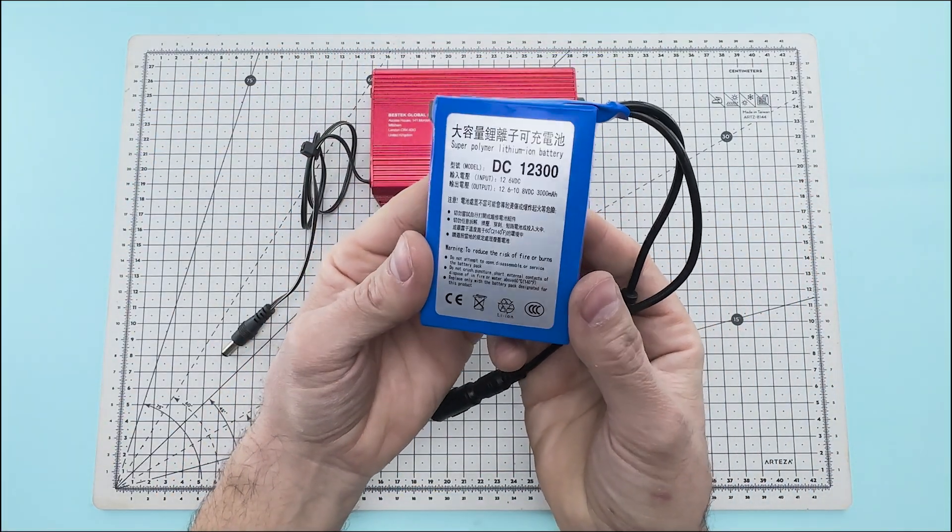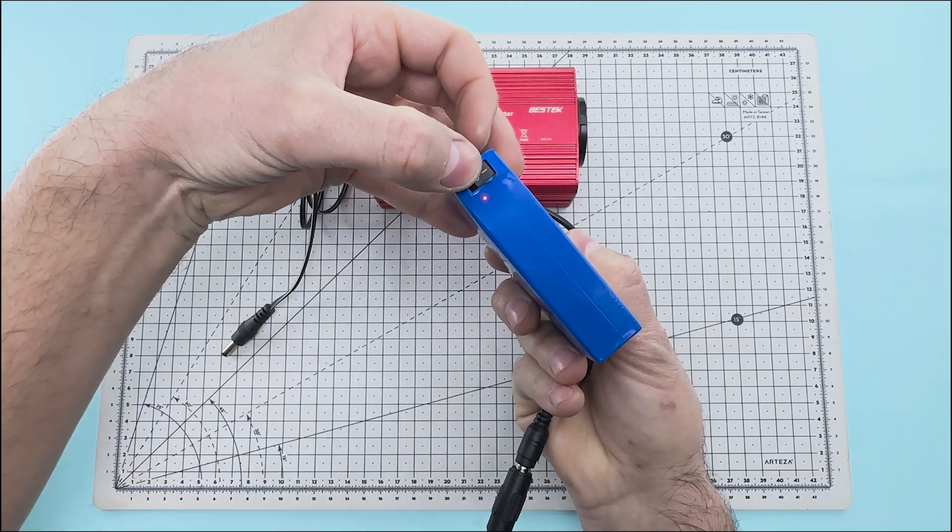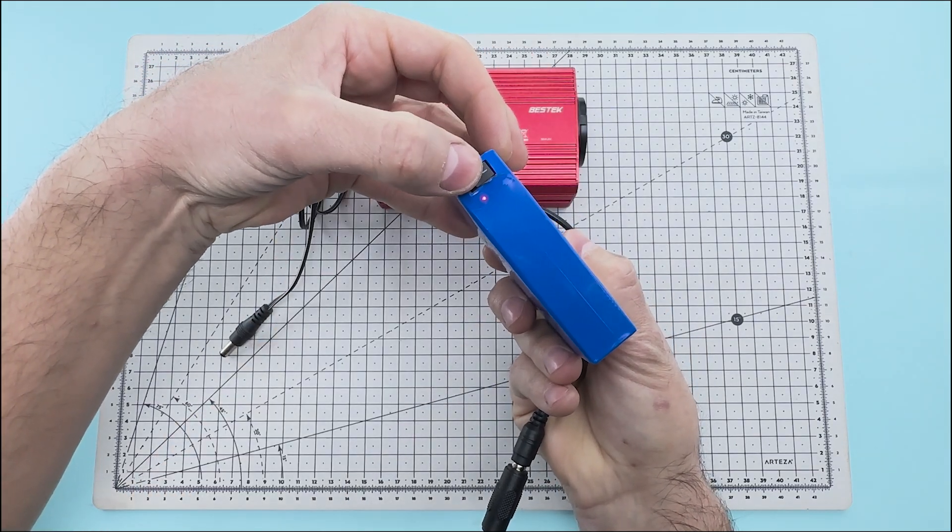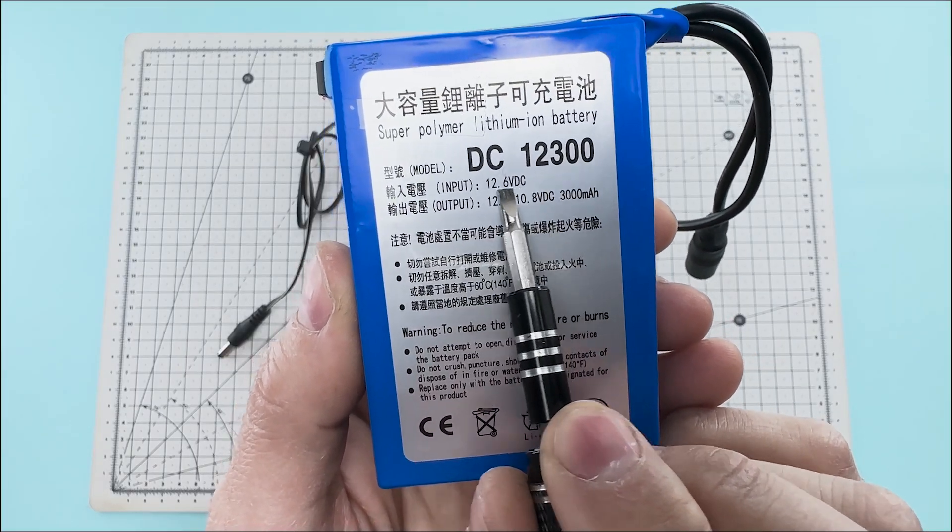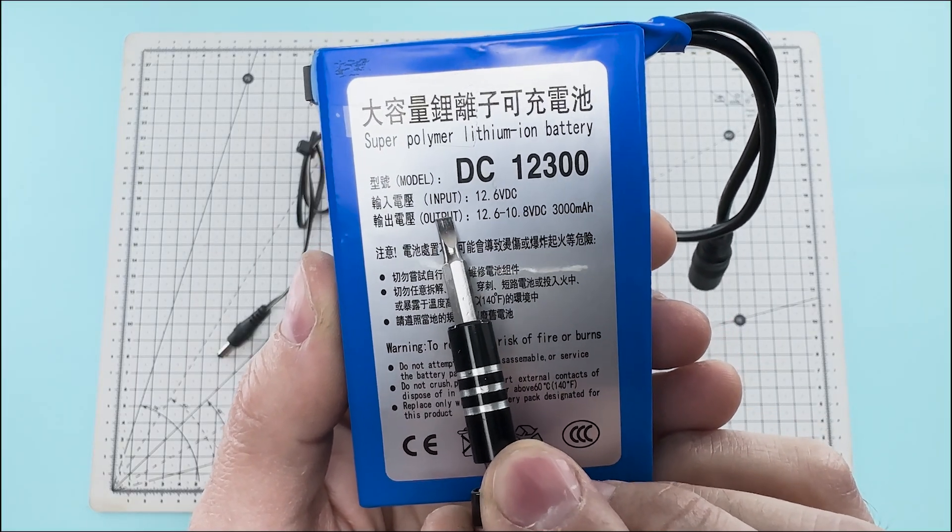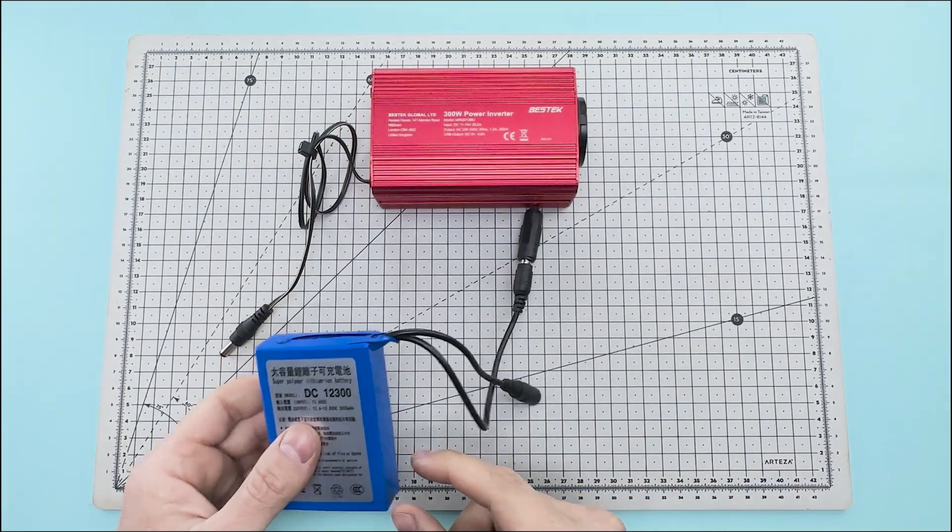We will also use a 12 volts direct current lithium battery. This battery has a switch to turn it on and off. The battery has a connector that accepts a charging voltage of 12.6 volts and it also has a connector that delivers a direct current of 12 volts.